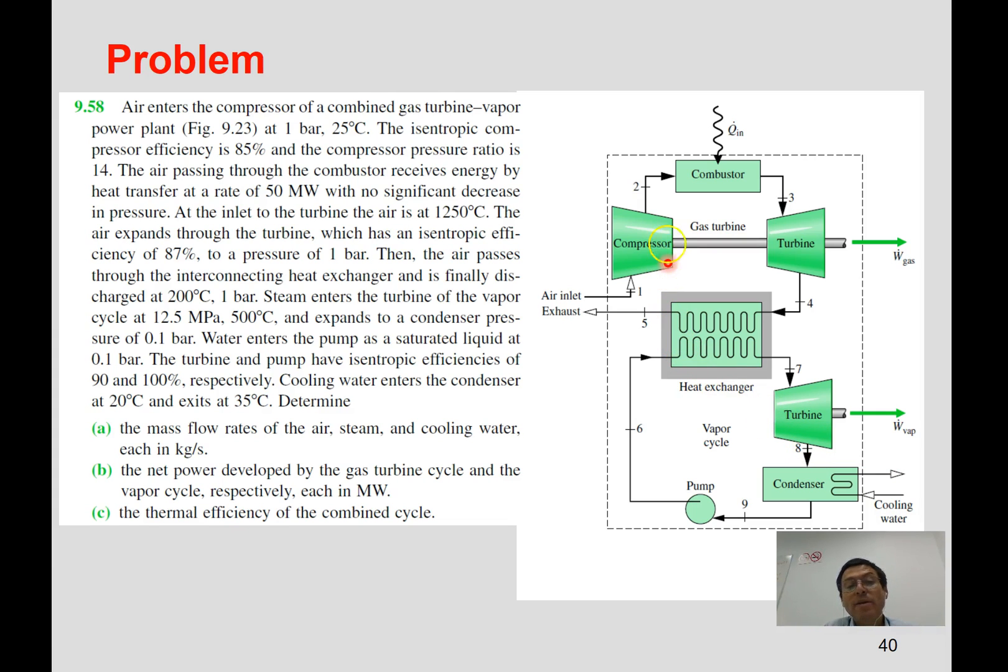Finally, we are being told that the condenser is cooled down by water that runs through the condenser. Water goes in at 20 degrees and leaves at 35. So what we are asked to find out is the mass flow rates of air, steam, and water. We need to find out the net power developed by the gas turbine and by the vapor cycle.